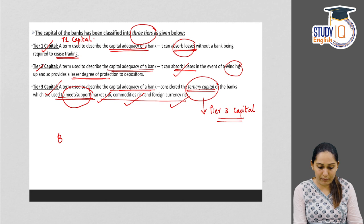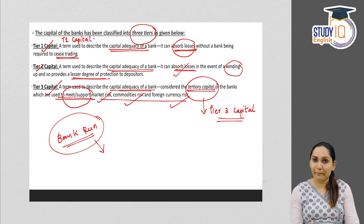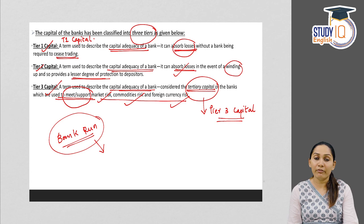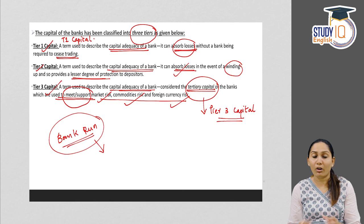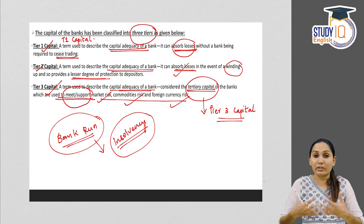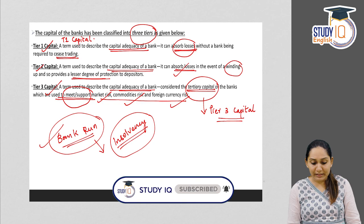A bank run is a situation that occurs when a large number of customers of a bank or financial institution withdraw their deposits simultaneously, due to concern over bank insolvency. Because of the fear of insolvency, a large number of depositors try to withdraw their money at the same time, leaving the bank short of liquidity. That's it for now; we'll be continuing with the series in the next video. Thank you.